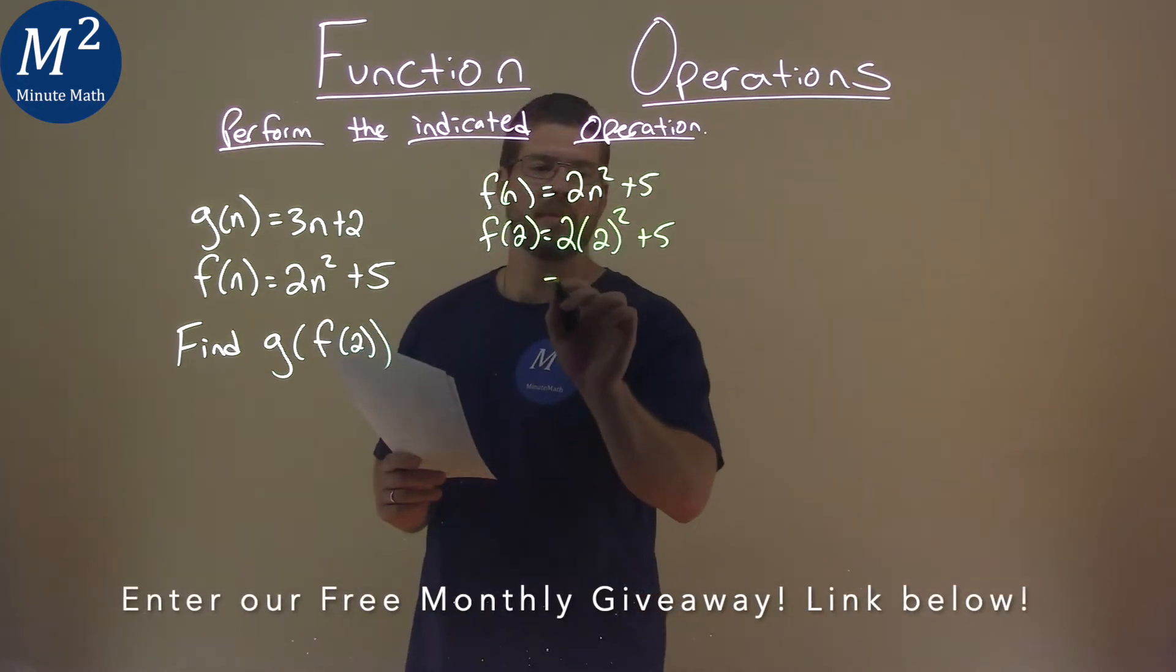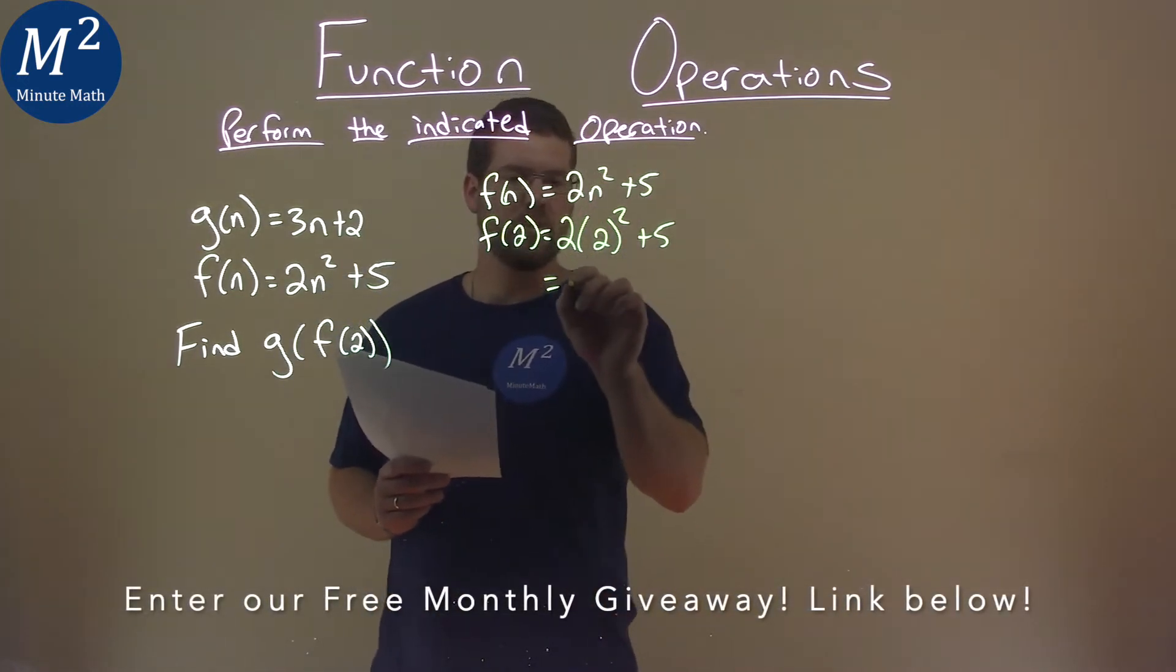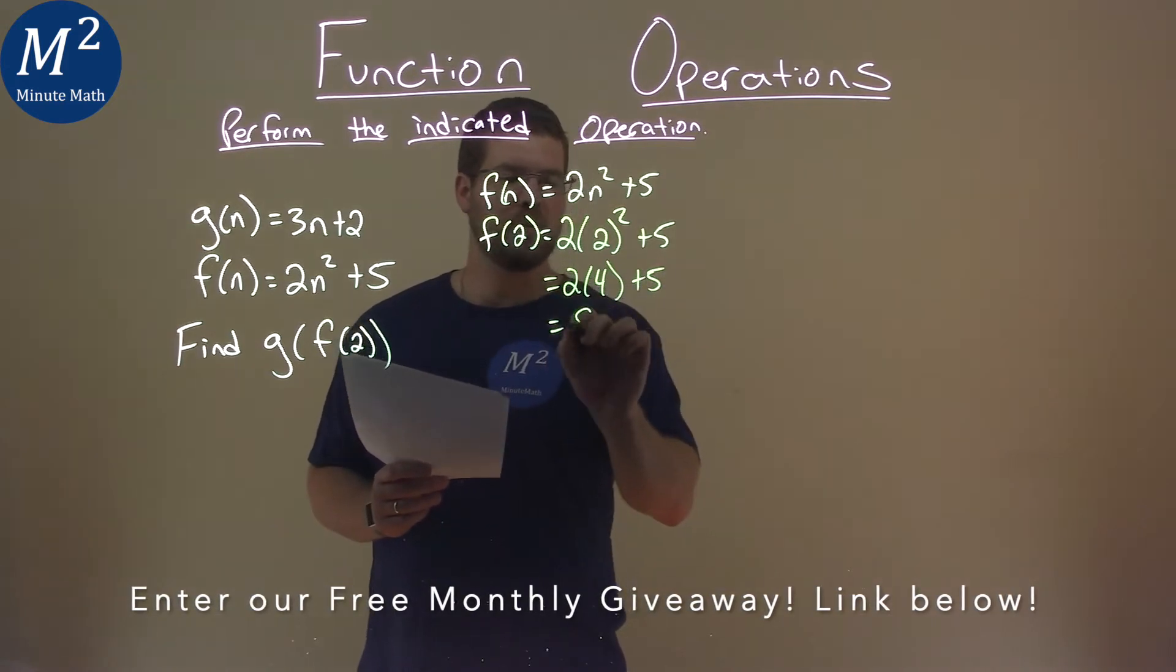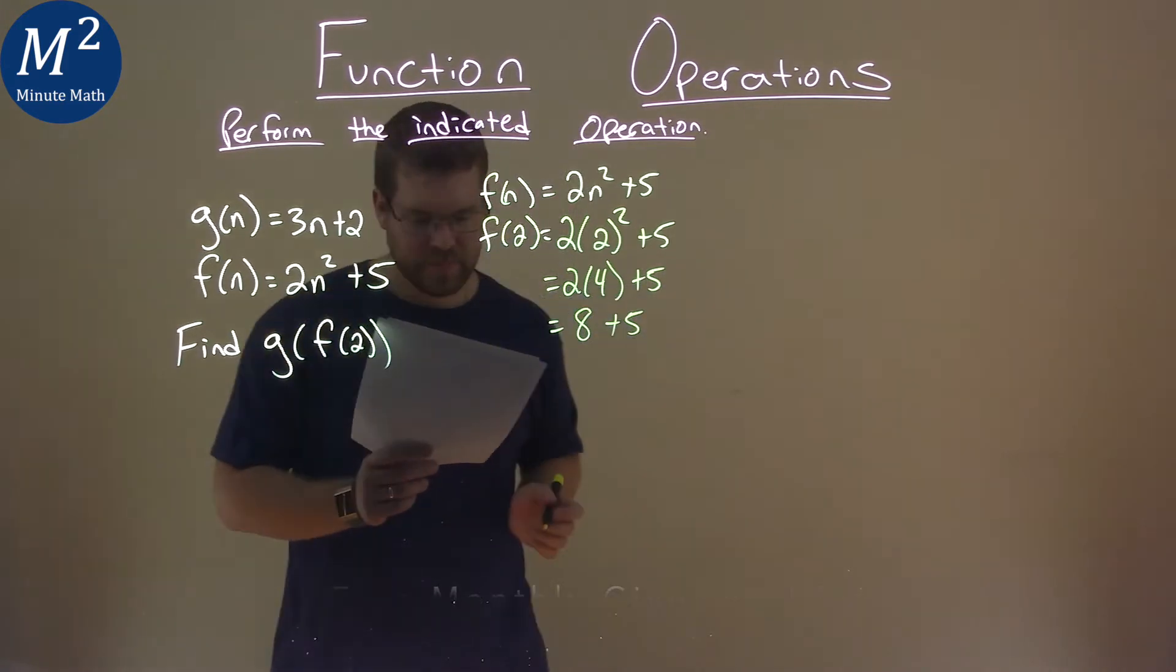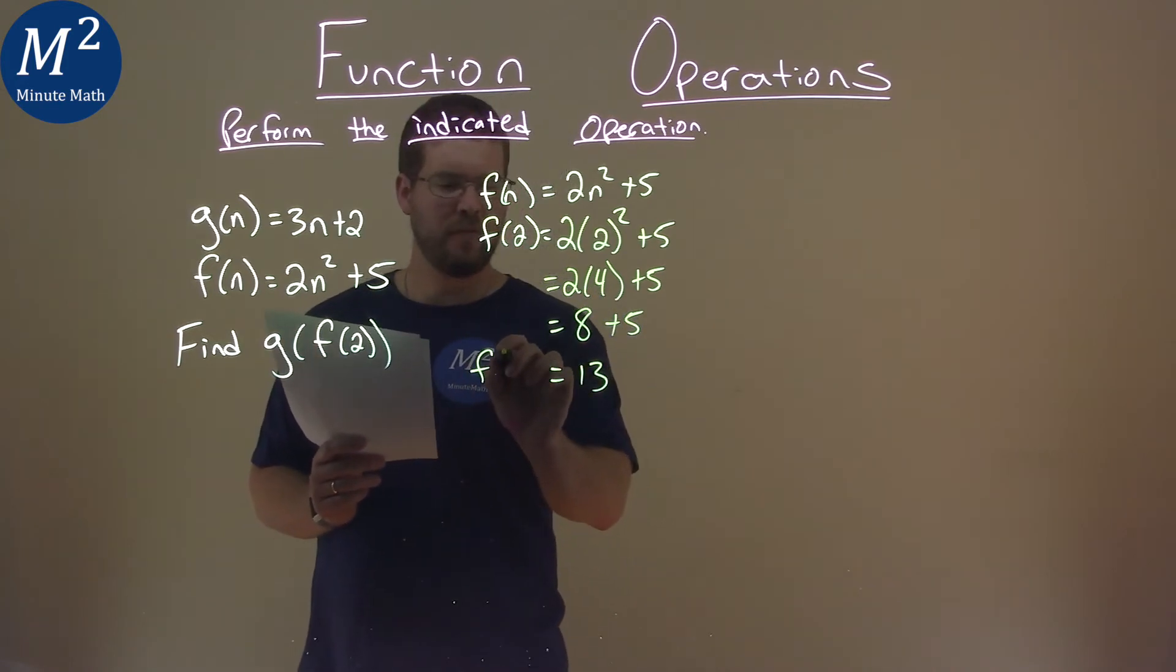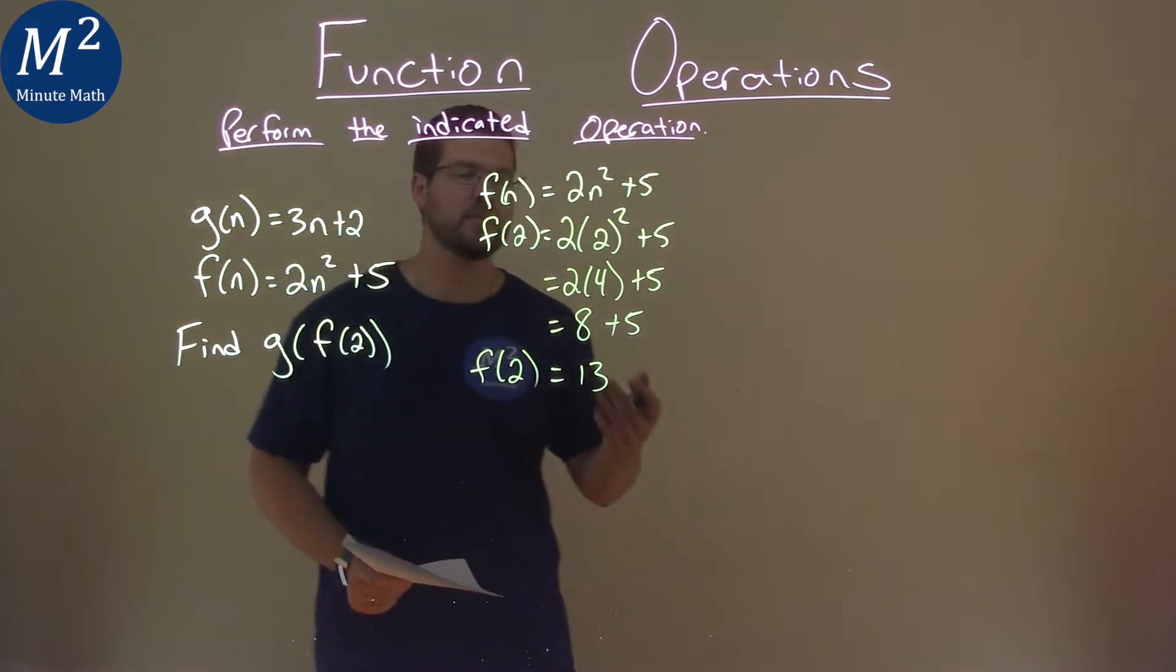2² is 4, so we have 2 × 4 + 5. 2 × 4 is 8, plus 5 equals 13. So f(2) = 13.